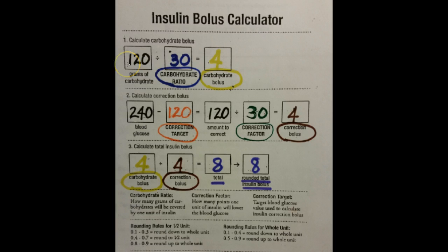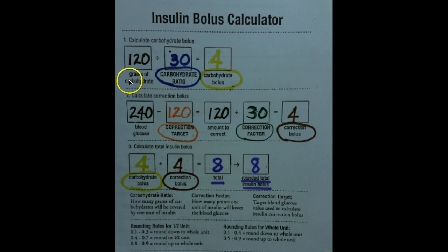We begin by calculating the insulin needed to cover the carbohydrates the student is eating. In the first box, labeled 'grams of carbohydrates,' you take the carbohydrates in each item of the student's meal or snack and add them all together. Carbohydrate information can be obtained from the school cafeteria or nutrition services department, from nutritional labeling on food packaging, or from free apps such as MyFitnessPal.